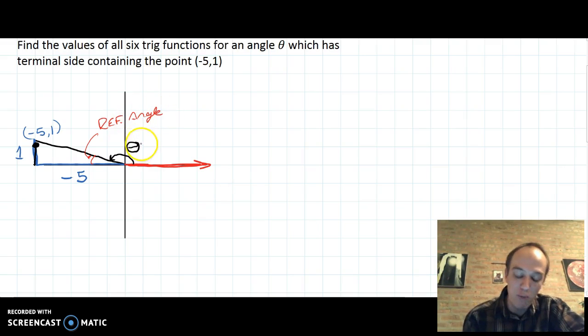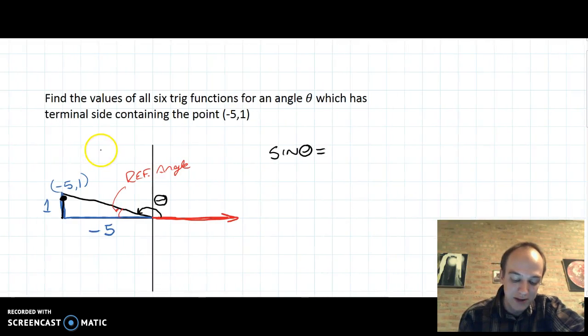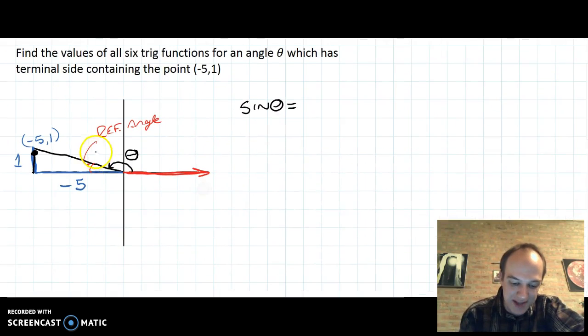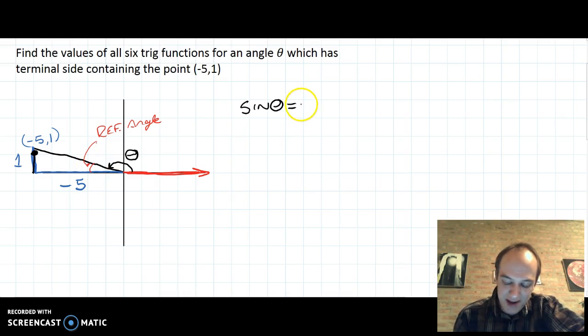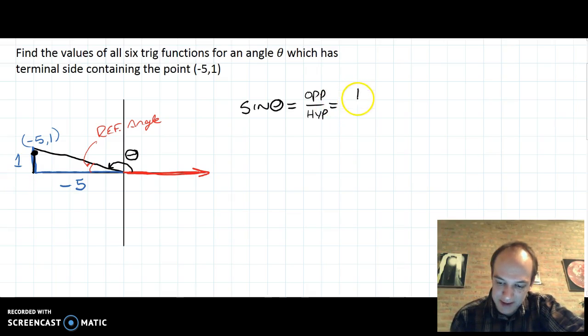And when we want to find things like the sine of theta, what we're really going to work with is the reference angle instead. So for the sine of theta, it's opposite over hypotenuse. There's no triangle that has anything to do with theta, so I look at my reference angle. The opposite side is 1. So sine of theta is going to be 1 over the hypotenuse.